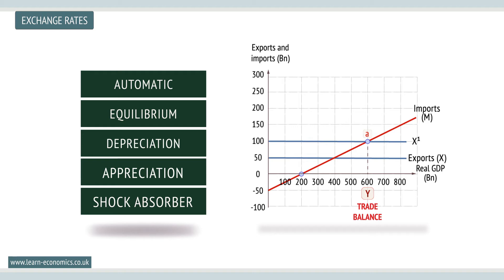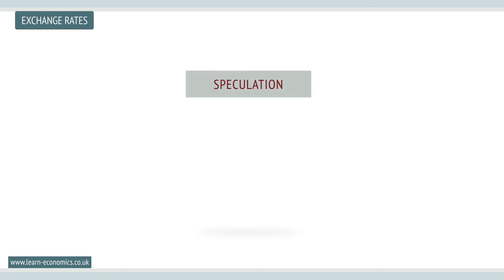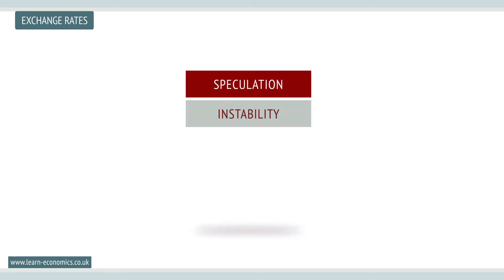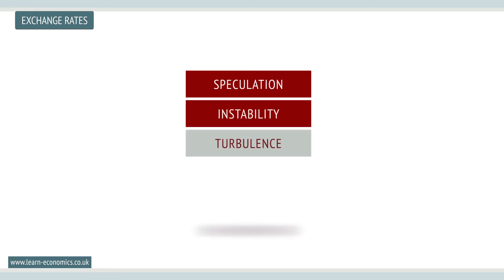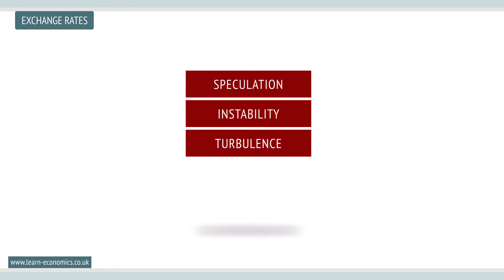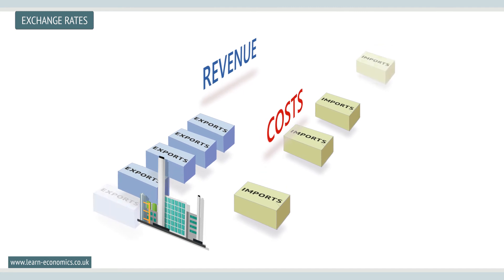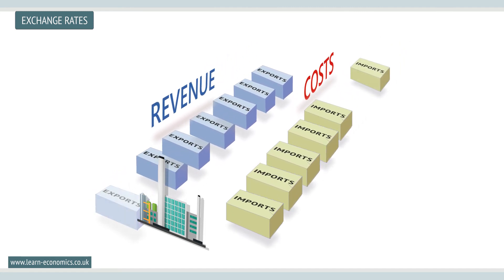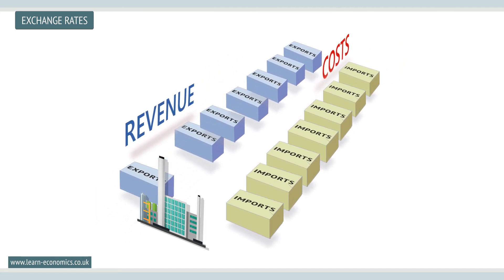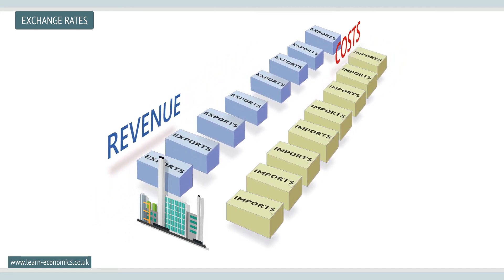However, under a floating system, speculation may lead to considerable instability in the foreign exchange market, causing turbulence in the wider economy. So, fixing rates can help reduce instability as well as provide certainty to producers who can predict the prices of their exports and the costs of imported raw materials, and are more likely to invest in capital.